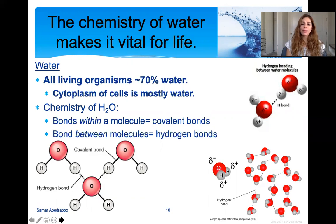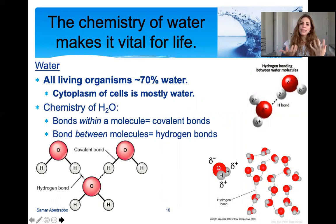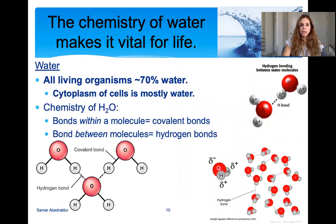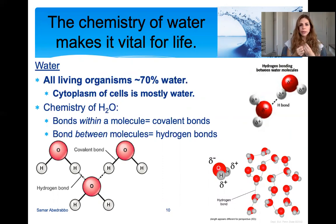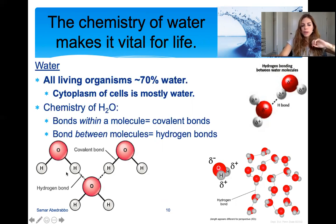All living organisms are about 70% water, and the water component is mainly the cytoplasm — everything inside the cell membrane. Water is an important molecule and has a lot of properties because of its structure, the H₂O molecule. It's important to know the chemistry of H₂O to understand why it's important. The bonds within a water molecule — the sharing of electrons — are covalent bonds. Water also forms bonds between individual water molecules called hydrogen bonds. Covalent bonds are the strongest bonds.